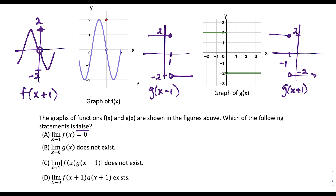Now we're ready to answer this limit. The first two answer choices we could eliminate quickly. The limit as x approaches one of f of x is equal to zero. Looking at this graph, when we approach from the left side and the right side, our limit is in fact approaching zero. So this would be a true statement — we want the statement that's false — so choice A is eliminated.